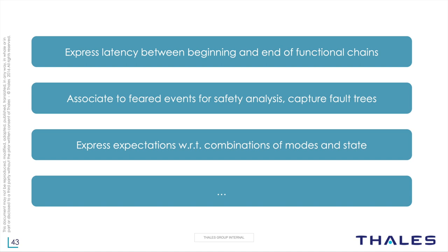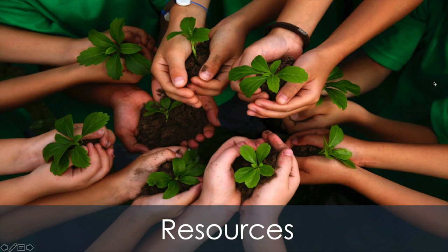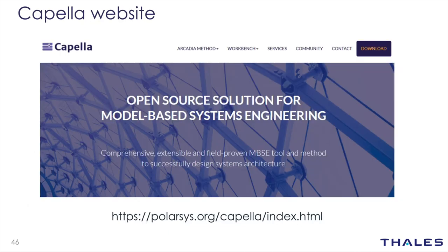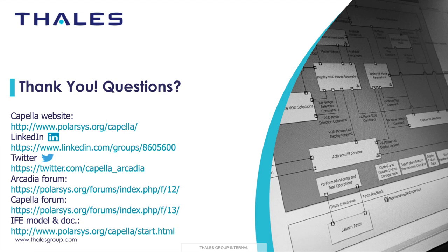We can use functional chains to express the functional expectations for the system in a certain context. The combination of modes and states in a system is exponential and difficult to predict; functional chains help specify what we expect in one context or another. I invite you to watch my previous webinar on modes and states if interested. So I'm reaching the end of this webinar. The resources available include public forums, the YouTube channel, the Capella website, and the whole community to answer your questions. And now we're going to move to the Q&A session. Thank you.